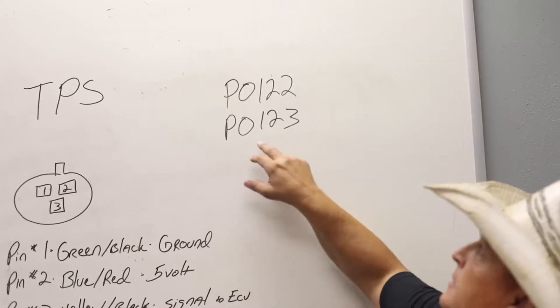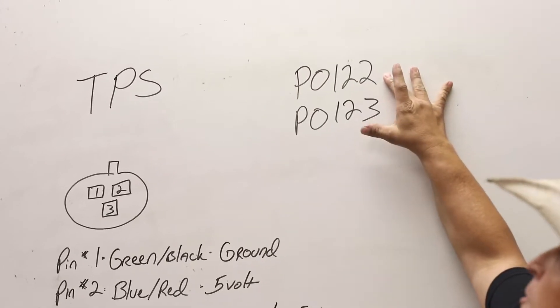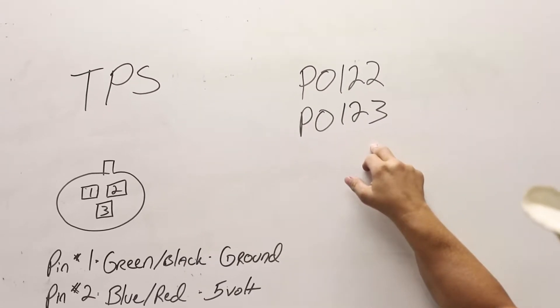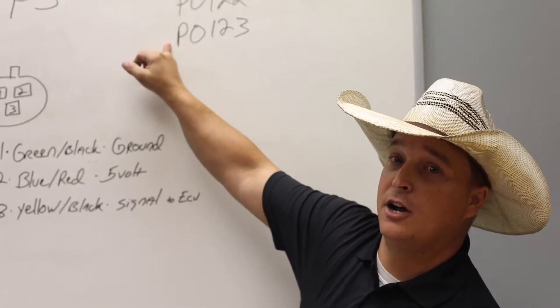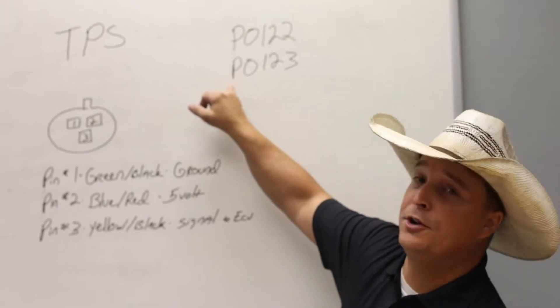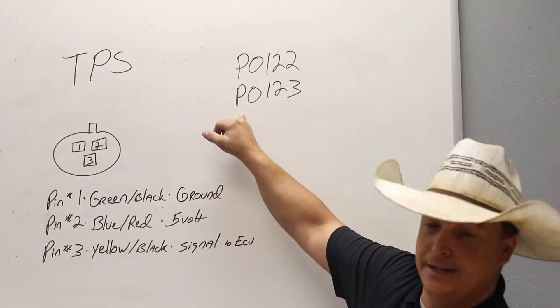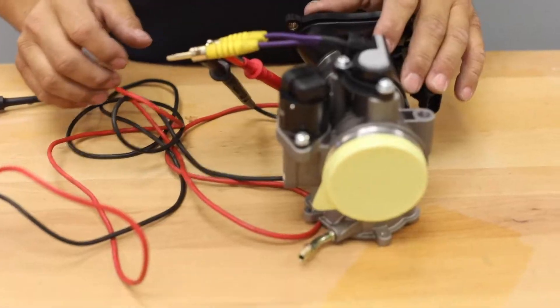The codes that correspond with this are going to be P0122, P0123. If you read it off the dash, you may not have a letter or you may have an E instead of a P. Alright, let's get into testing this thing.